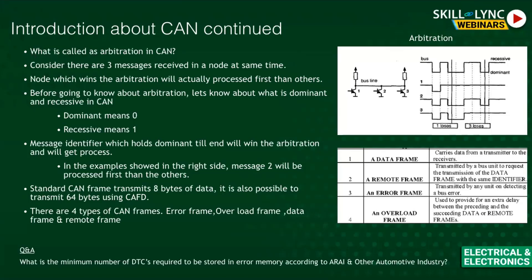In CAN there is an algorithm for passive error and active error. When the error count reaches 255, the bus must stop communication and will never allow messages to be sent. An overload frame comes into picture when frames are overloaded — for example, if there is an extra delay between sending data and remote frames. So there are four types of CAN frames overall: data frame, remote frame, error frame, and overload frame.